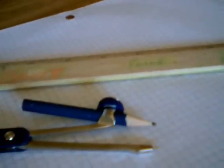To draw a perpendicular line through a point off the line, you will need a straight edge, a compass, and a pencil.